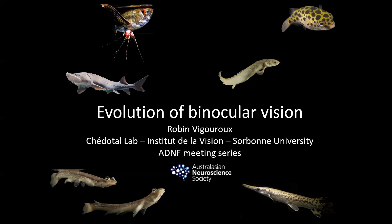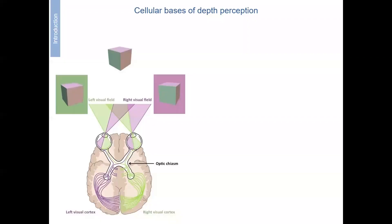During my PhD work I looked at the development of the visual projections, and in particular what were the cellular bases of binocular vision and how these may have come up during evolution. So very quickly: what is binocular vision? In a simpler way of saying it, it's depth perception or 3D vision.